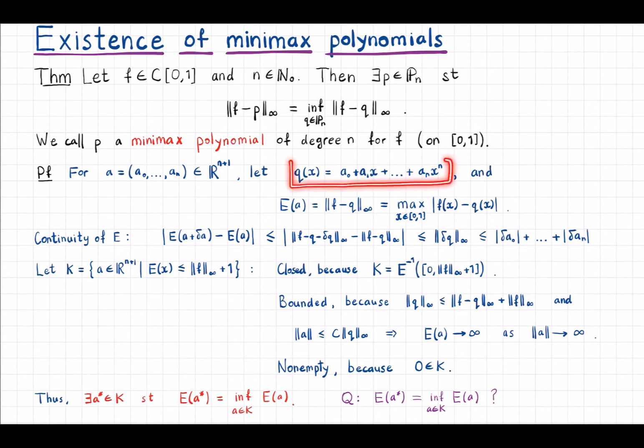Given these coefficients we have this polynomial q and define this function E depending on the coefficients a as the error between f and that given polynomial q.